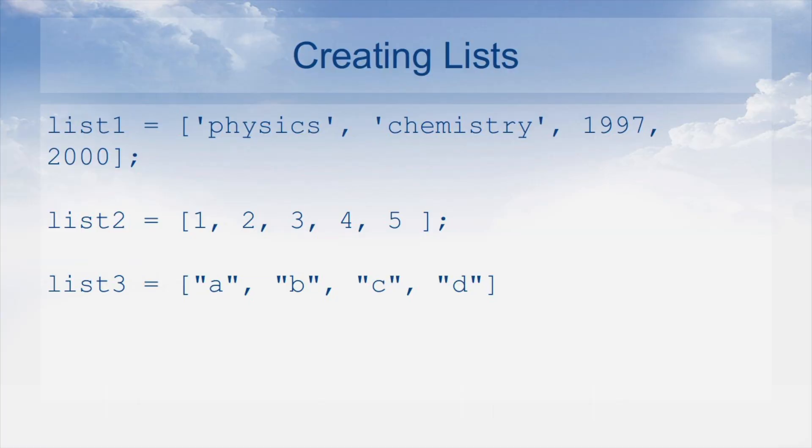Now, coming to Python list. The list is the most versatile data type available in Python, which can be written as a list of comma-separated values called items between square brackets. An important thing about a list is that items in a list need not be of the same type. Creating a list is as simple as putting different comma-separated values between square brackets. Here in this slide, you can see the different ways of creating lists.